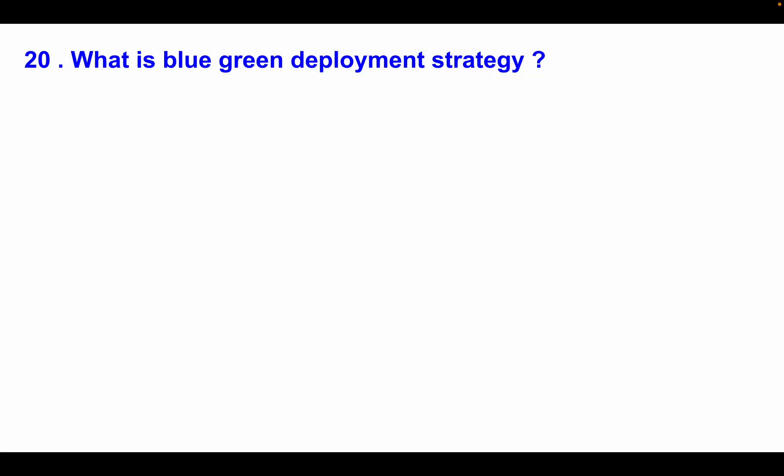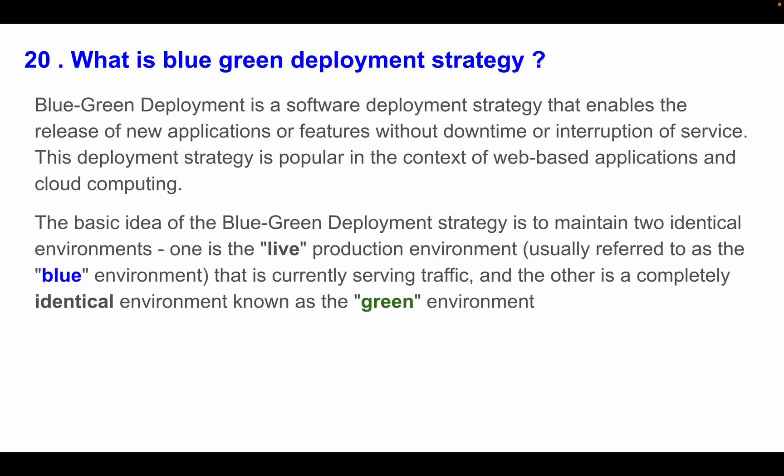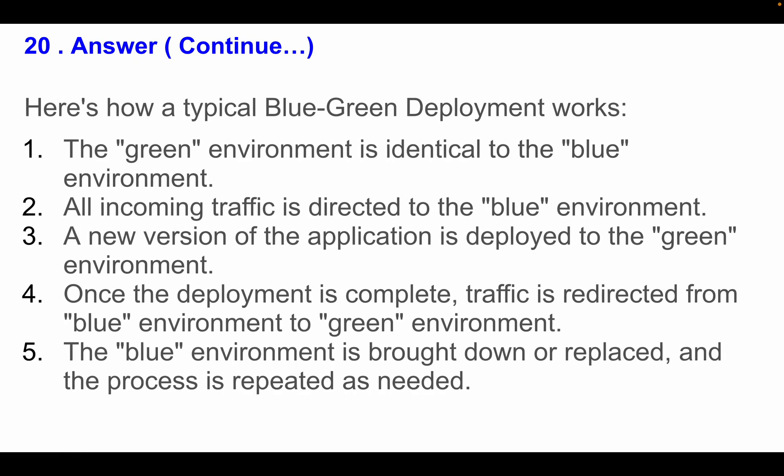Question 20: What is a blue-green deployment strategy? Blue-green deployment is a software deployment strategy that enables release of new applications or features without downtime or interruption. It is popular for web-based applications and cloud computing. The idea is to maintain two identical environments: the live production environment (blue) currently serving traffic, and an identical standby environment (green). The new version is deployed to the green environment; once complete, traffic is redirected from blue to green. The blue environment is then brought down or replaced, and the process repeats as needed.